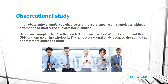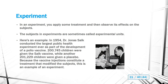An observational study is where you observe the sample set without trying to modify or treat it in any way. An example is the Pew Research Center surveying 2,252 adults and finding that 59% of them go online wirelessly. There's no attempt to change the people in the study — you're just asking them a question and observing what they do or don't do.